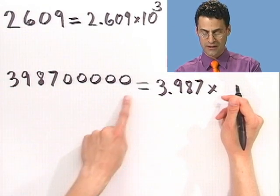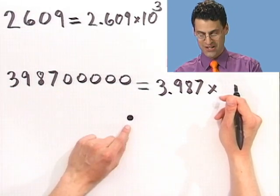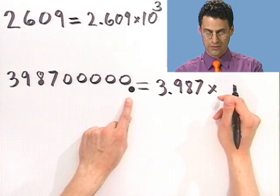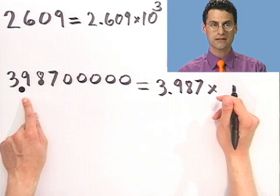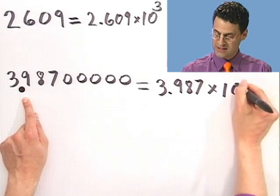To get that decimal point to go way over there, what do I do? Let's count: 1, 2, 3, 4, 5, 6, 7, 8. So I'd have to put in here 10 to the 8th power.